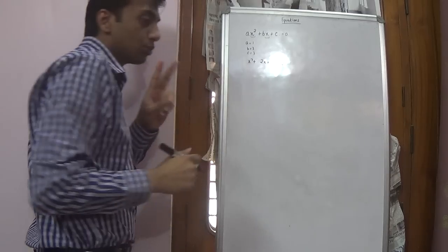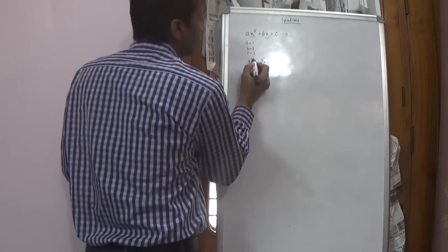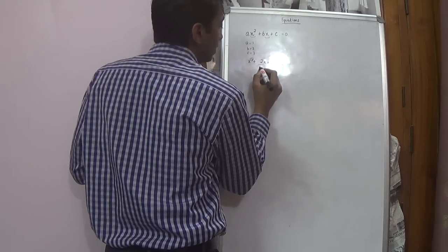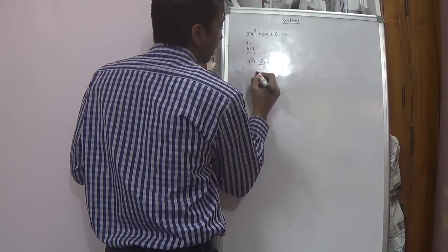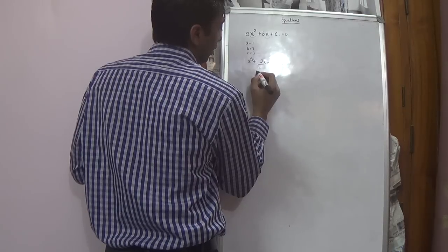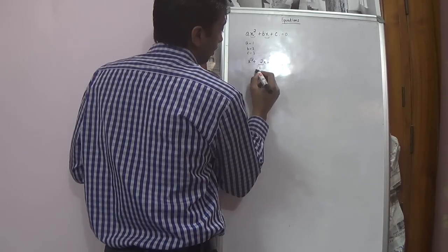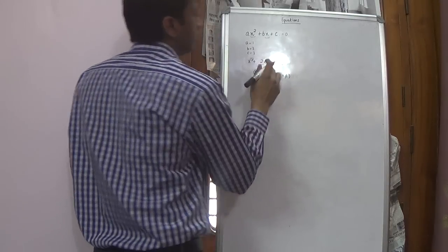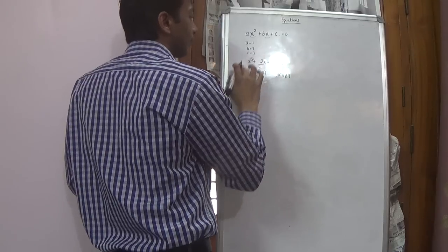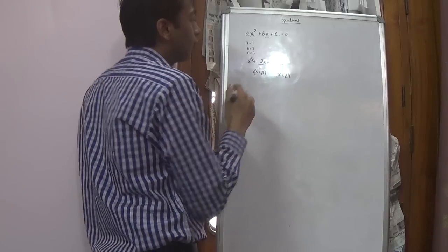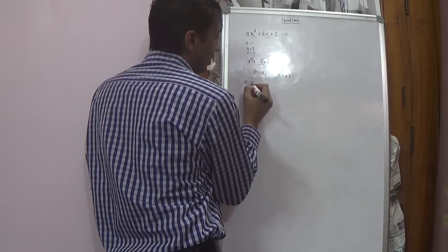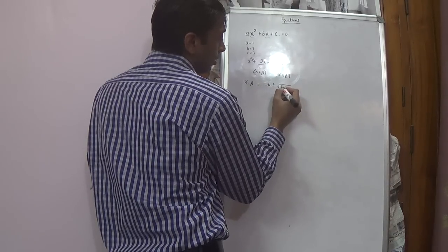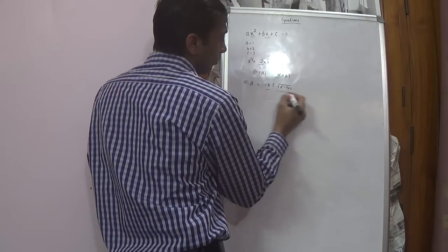Now this equation has 2 roots, or X can take 2 values because the highest power of X is 2. A couple of things we need to know: this is the sum of roots. So let us say the roots are alpha and beta, then alpha plus beta is the sum and alpha into beta is the multiplication of roots. The standard formula to solve this is: alpha and beta equal to minus B plus or minus under root of B square minus 4AC over 2A.